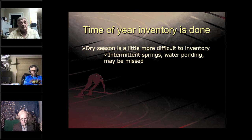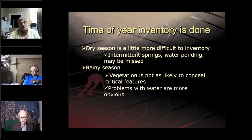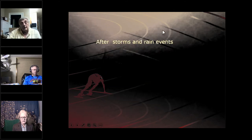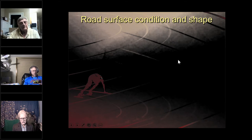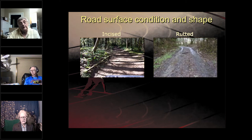Take inventory of your road systems at the right time of year. The dry season is more difficult — intermittent springs and water ponding may be missed. If you do your inventory in the rainy season, vegetation is less likely to conceal critical features, problems with water are more obvious, intermittent springs are active, and you can see water running in ruts or tire traps. Inventory your road systems after storms and large rain events to detect problems early — sometimes you can correct them with a shovel to prevent more serious and expensive damage.